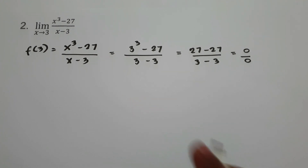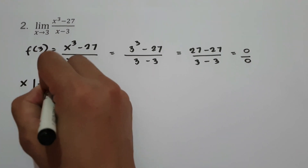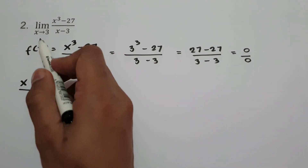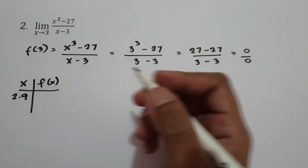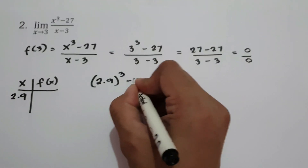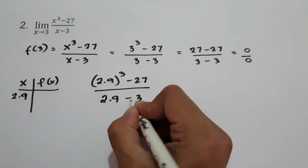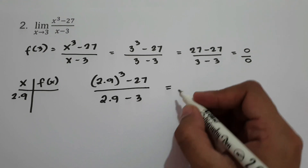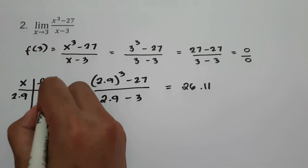But if we make a table of x and f(x) and set values closer to 3 — say x = 2.9 — we compute 2.9 cubed minus 27 all over 2.9 minus 3. Plugging this into the calculator gives 26.11.